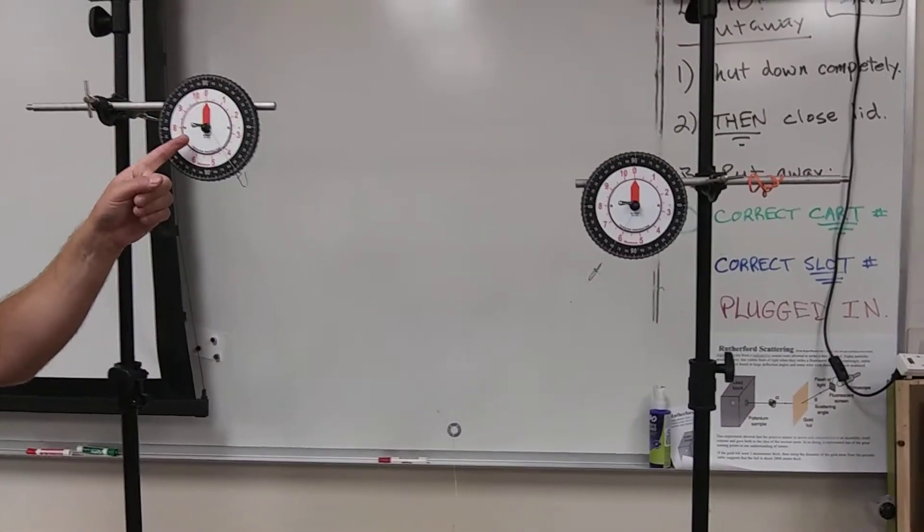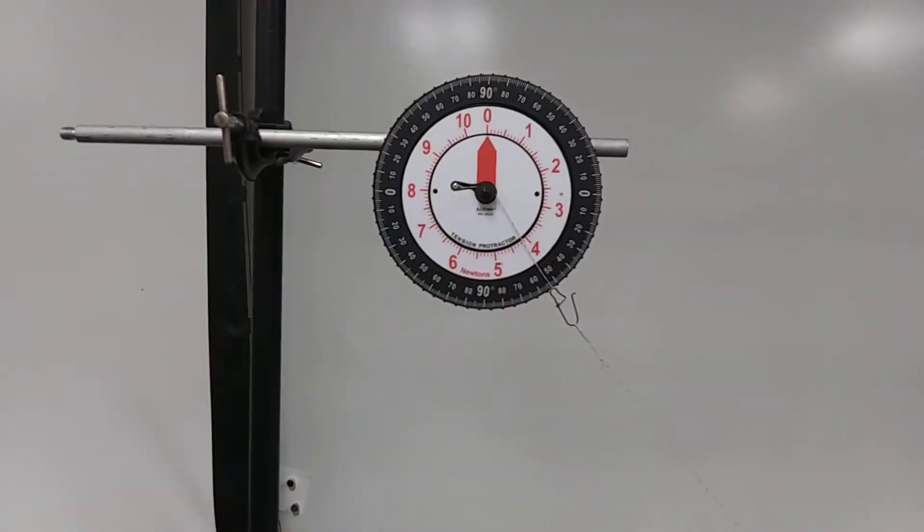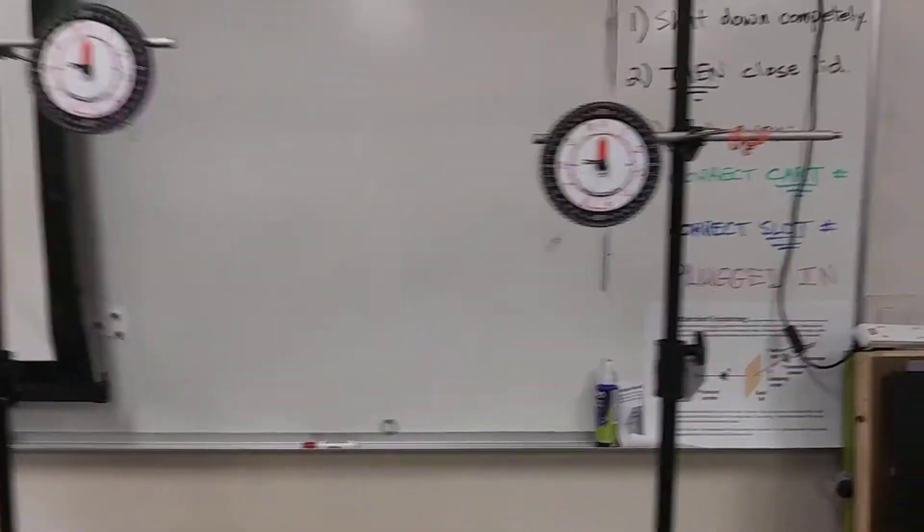So we've got a couple of scales. You see that this reads the tension in red in Newtons. There's also a protractor around the outside. Obviously right now it's at zero because there's no weight hanging on here.